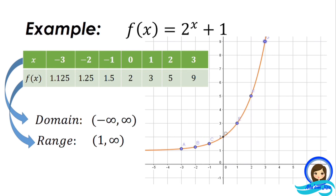Identifying the domain and range of exponential functions is easy. For the domain, it is always the set of real numbers from negative infinity to positive infinity. For the range, if the function has no shiftings, its range is always from 0 to positive infinity.